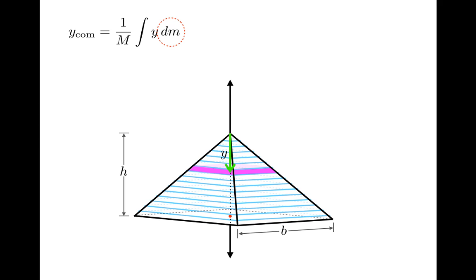Replace dm with that expression, and we'll be ready to integrate. So the first key thing to note is that the ratio of the total mass of the pyramid to the total volume of the pyramid is the same as the ratio of the mass of a slab to the volume of that slab.